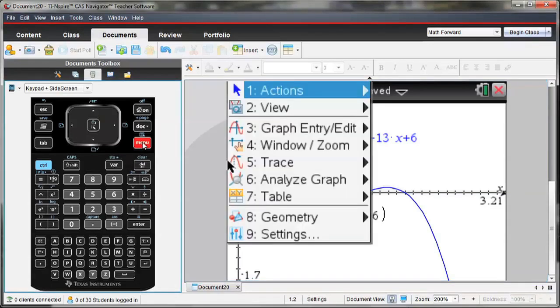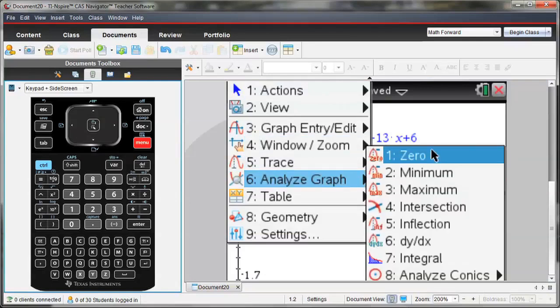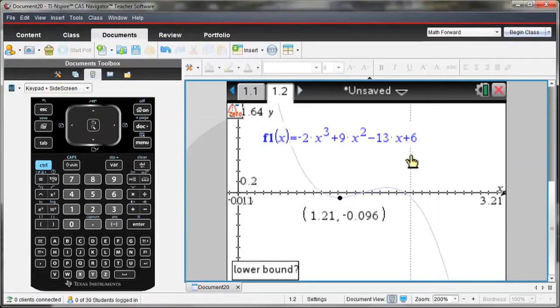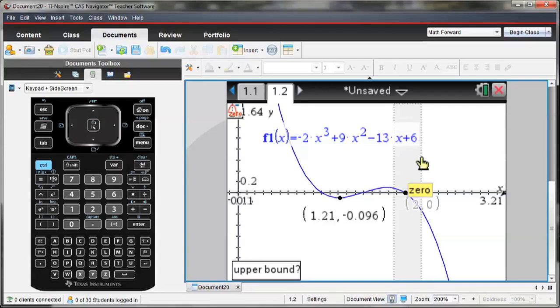Likewise, I can also do this for my zeros. Select Menu, Analyze Graph, and Zero. Start the lower bound from the left of the zero you'd like to know, and drag over so the upper bound is just to the right. Notice that as I did that, the zero value where my zero occurred showed up on the graph.